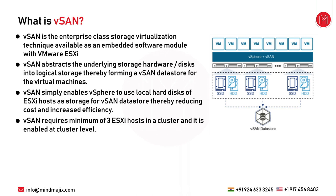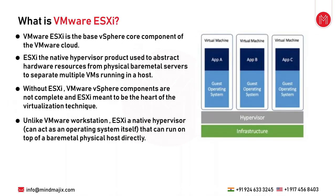vSAN is widely used in hyper-converged infrastructure and has saved costs for many customers. It requires a minimum of three ESXi hosts in the cluster and is enabled at the cluster level. Hosts typically have a high-capacity disk and a high-performance disk working together so there is no compromise on performance or capacity.